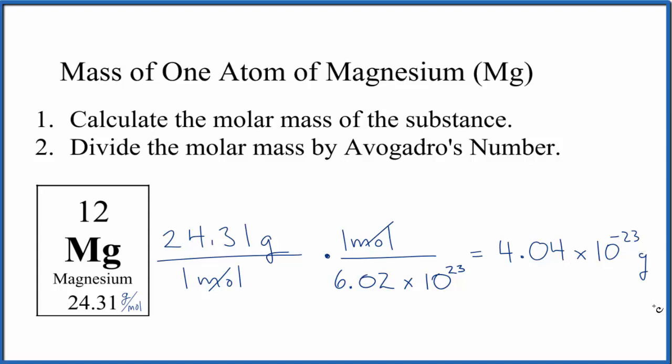Finally, this is the mass of an average magnesium atom. So if you were given an isotope, say magnesium-26, for this isotope of magnesium, you just use 26, put that in instead of the 24.31. You do the math, and that would give you the mass of one atom of the magnesium-26 isotope.